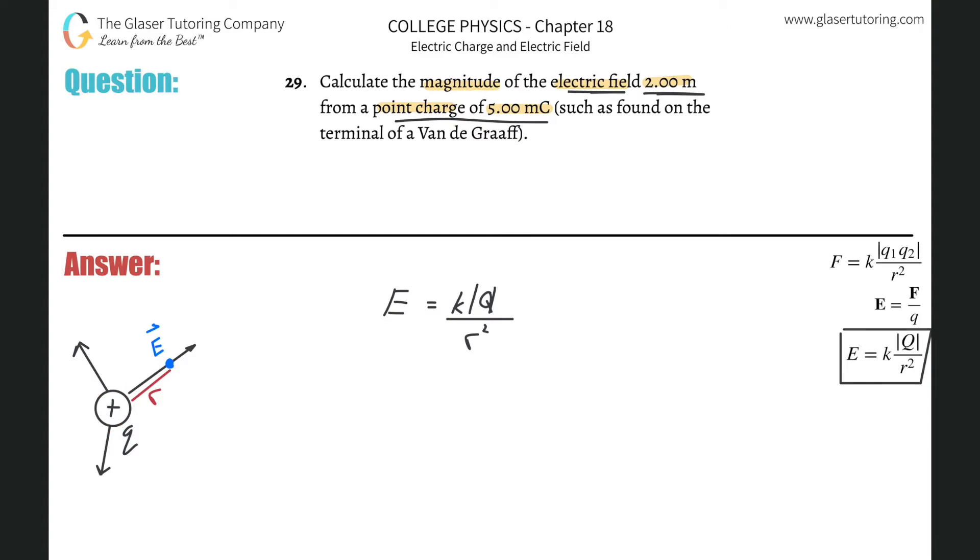Here, what I need to do is just simply plug in. So this is 8.99 times 10 to the ninth. The Q value was 5 milli, so that's 5 times 10 to the minus 3 coulombs. And then we divide by the distance in meters squared. Don't forget to square it.